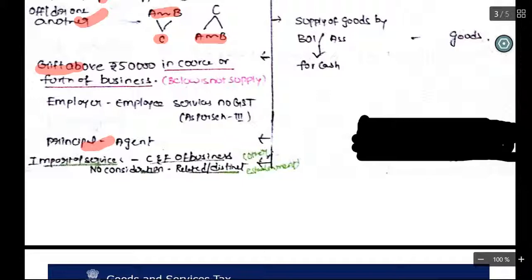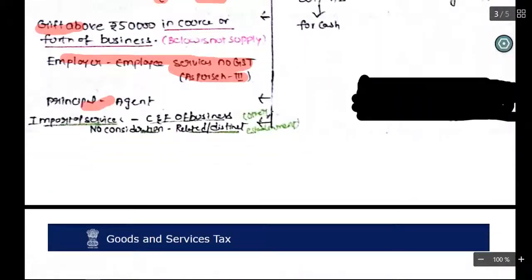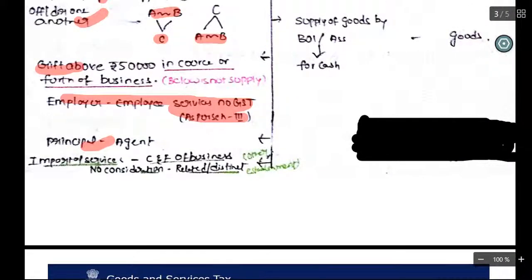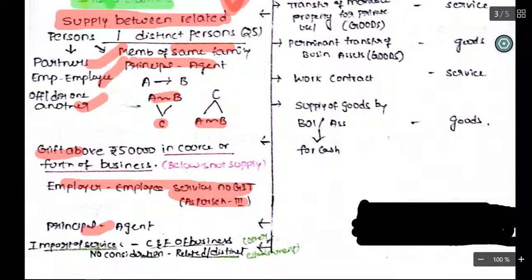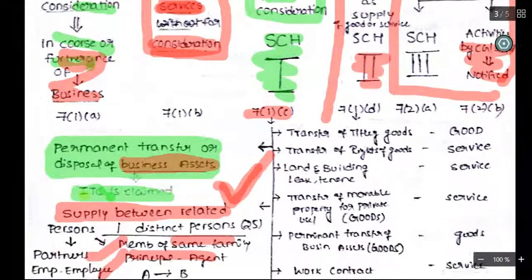The employee-employer relationship services are not covered in Schedule 3. In GST it must be remembered that there must be a supply — it must be covered in the definition of supply. If it is not supply, there is no result. Even though with respect to Schedule 3 there is a transfer of goods and services, these are not treated as supply, so there is no GST.